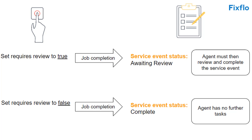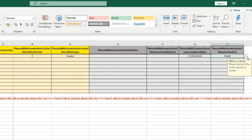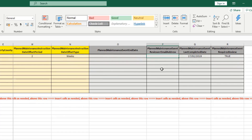There are benefits to this — it is great for statutory events. However, for non-statutory events like gardening, you could set requires review to false. If set to false, when the issue is completed and closed, the service event will update as green, complete, and compliant, which will pull through on your works planner on a per property basis and on your compliance matrix. For this example, I'm going to select true, and I can also add the reviewer email address here. This must be an agent already on your system — do not add an email address that does not reflect an agent.